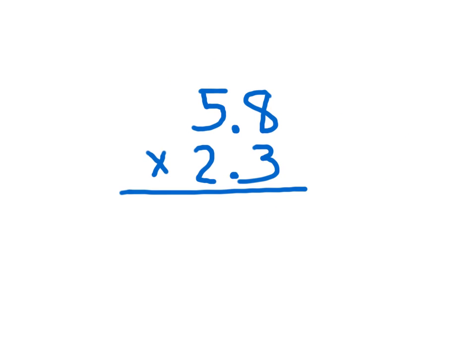Here we have 5.8 times 2.3. Really, we just think of 58 times 23, and then we'll go ahead and work with our decimal places. So, 3 times 8 is 24. Place the 4, regroup the 2. 3 times 5, which is 15, plus 2, which is 17. I'll cross out that regroup.